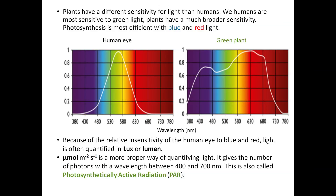We humans differ from plants with regard to our sensitivity to light. While the human eye is particularly sensitive to green light, plants have a much broader sensitivity and photosynthesis is most efficient with blue and red light. Because of our comparative insensitivity to blue and red light, we often quantify light using lux or lumen. However, this is not the most appropriate way to measure light for plants. From a scientific perspective, we prefer to express light in micromoles per square meter per second, giving the number of incoming photons with a wavelength between 400 and 700 nanometers. This is often referred to as photosynthetically active radiation, or PAR.